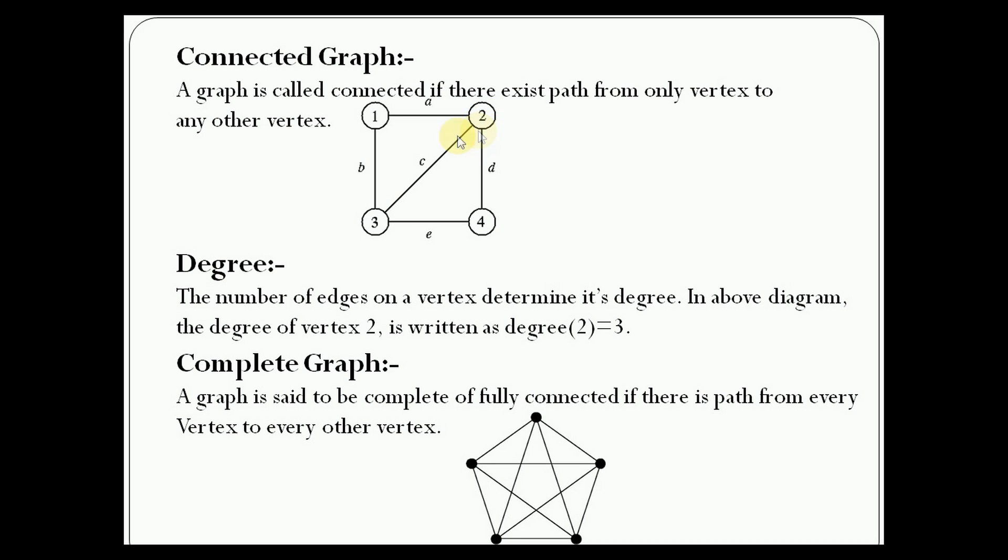A graph is said to be complete or fully connected if there is a path from every vertex to every other vertex. In the diagram, each vertex is connected to every other vertex, so it's called a complete graph.